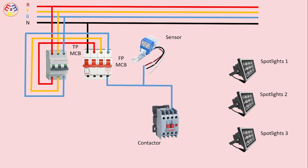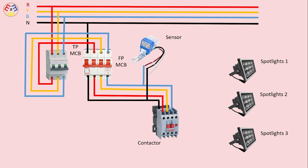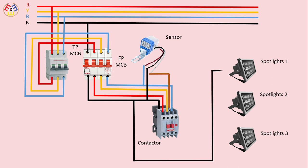The sensor connects to the contactor. The second-face positive line goes to the contactor, and the negative line also connects to the contactor. The sensor negative line connects to the spotlight.